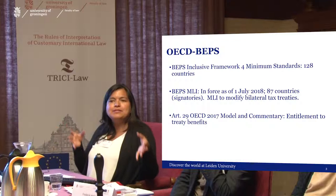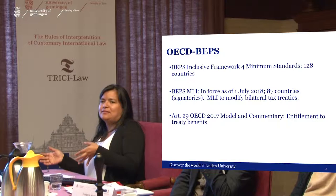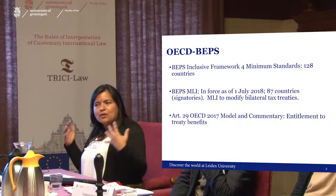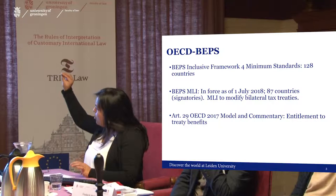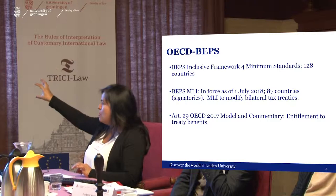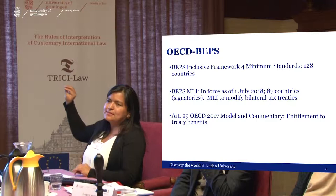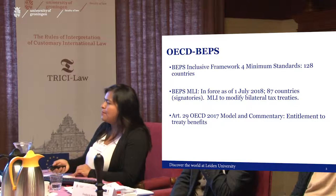When an OECD country wants to sign a tax treaty with a non-OECD country, they also use the OECD model. There are also issues of dynamic versus static interpretation and the Vienna Convention on the Law of Treaties. In all three frameworks — the inclusive framework as soft law, the MLI as a convention, and the OECD model as soft-law guidelines — the topic of the principal purpose test appears, and that is important to think about.